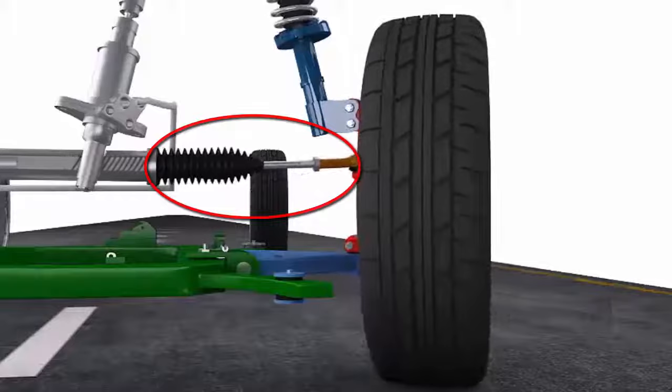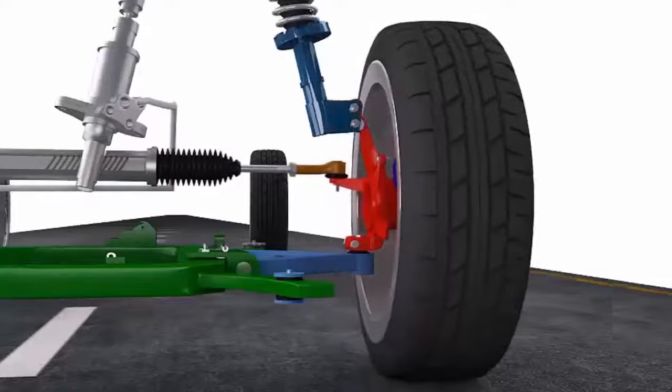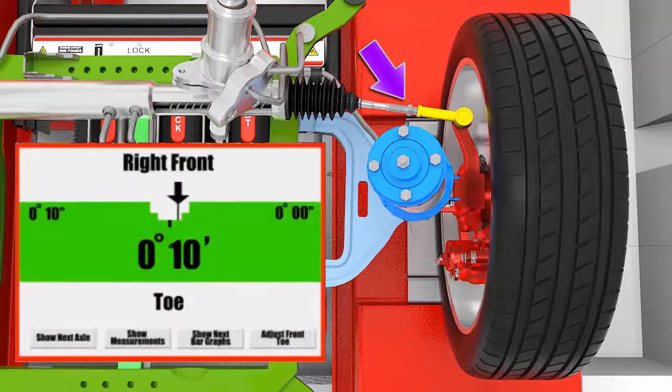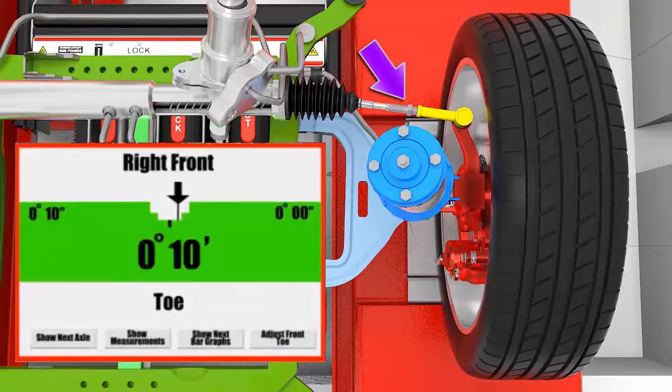As the steering rack and pinion moves left and right, the angle of the wheels change. Some steering components can be adjusted to ensure that all four wheels are aligned correctly. Regular alignment checks help to prevent premature tire wear.